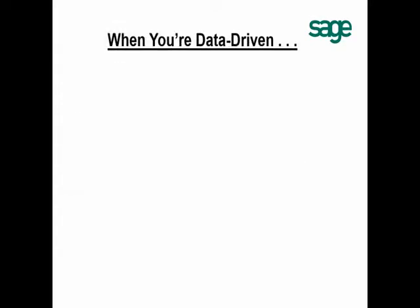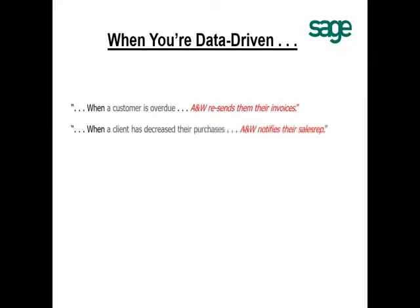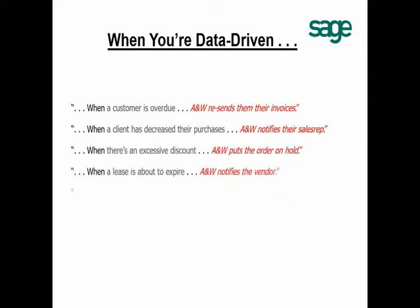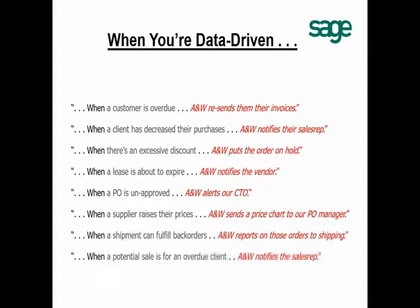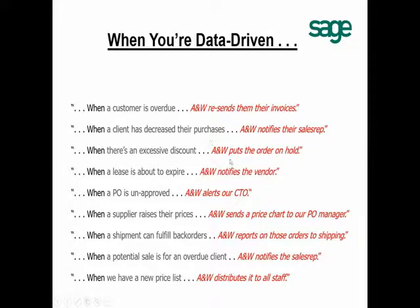Going back to those business scenarios: when a customer is overdue, Alerts and Workflow can automatically resend those customers copies of their overdue invoices. The product isn't just called Sage Alerts — it's called Sage Alerts and Workflow. For example, when an order has an excessive discount, Alerts and Workflow can put that order on hold. So it can do more than just tell you about business conditions — it can take actions in response to them.